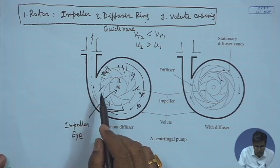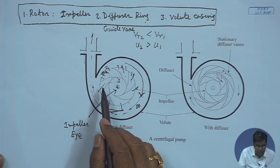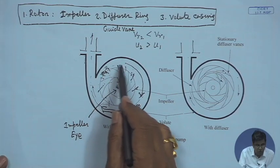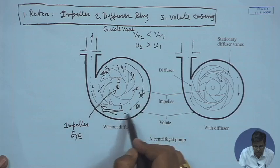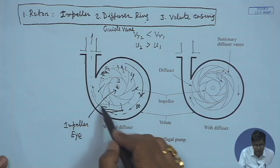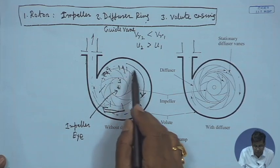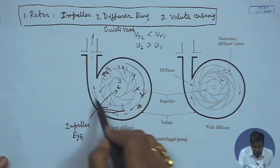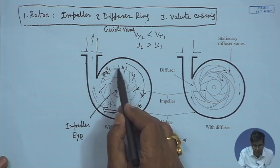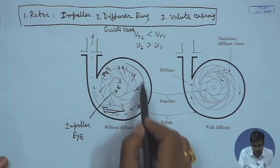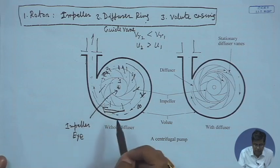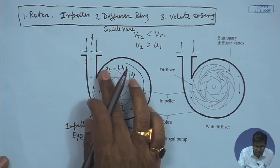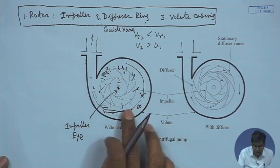Usually about 10 percent of the head generated by the impeller is lost in the volute casing because of the viscous action of the fluid. Finally, the fluid — that is water — comes out of the volute chamber where the kinetic energy, that is the velocity, is converted into pressure, that is the static head. This is a typical volute, which is a spiral casing.